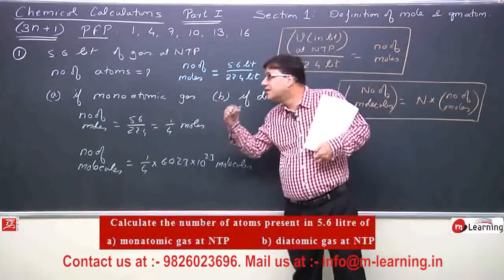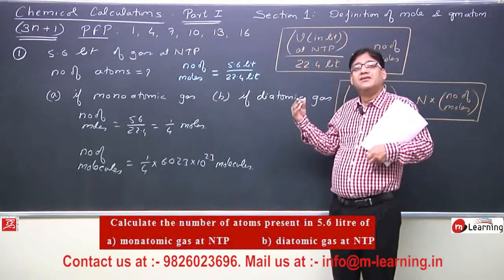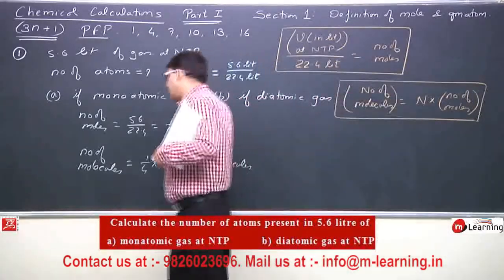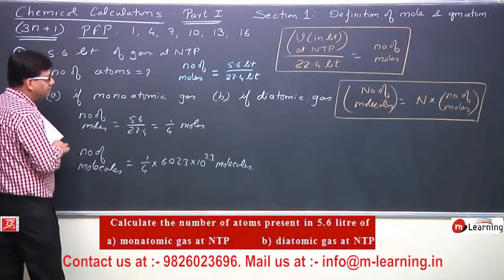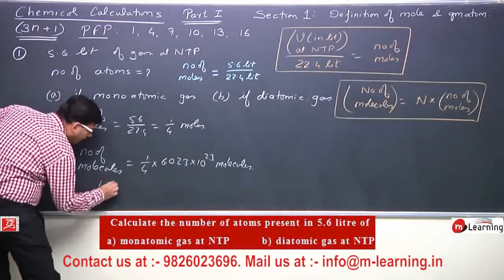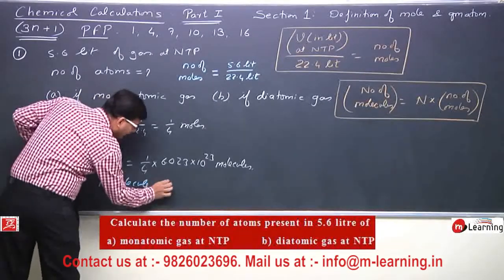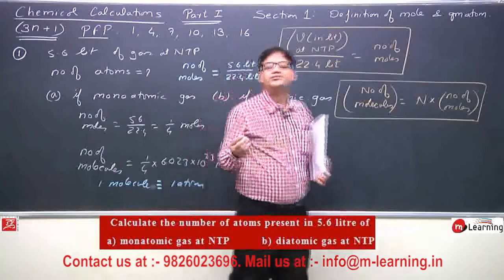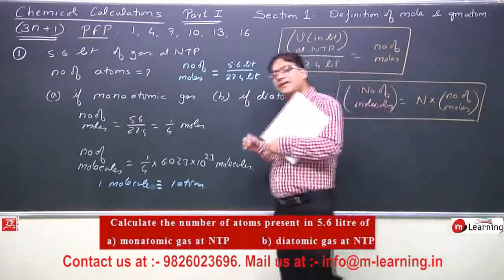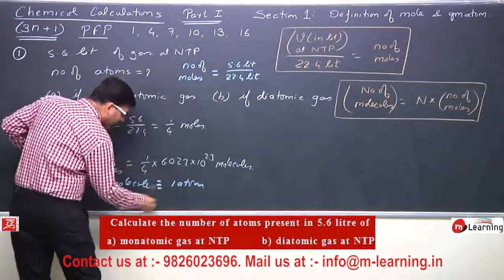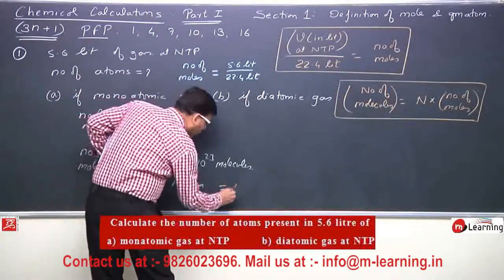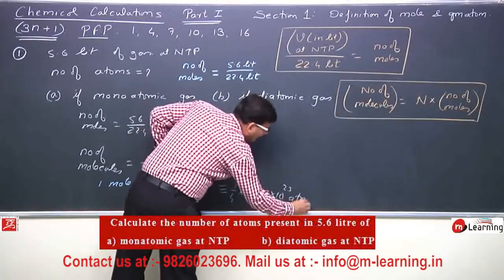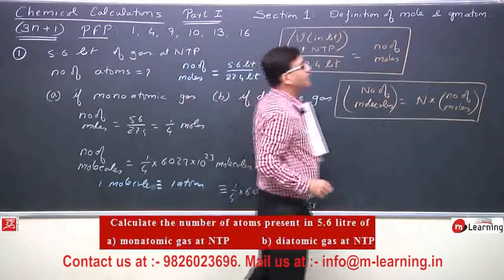Now we are asked for the number of atoms. In a monoatomic gas, one molecule contains one atom. So as many molecules as there are, that many atoms there will be. The number of atoms equals 1/4 into 6.023 × 10²³ atoms. The number of molecules equals the number of atoms.